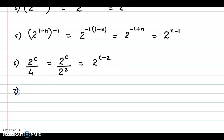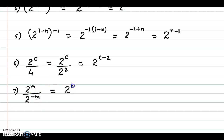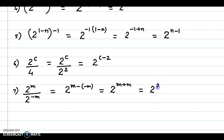Taking the next example: 2 raised to m upon 2 raised to minus m. Using the law of exponents, this is 2 raised to m minus minus m, which gives us 2 raised to m plus m.